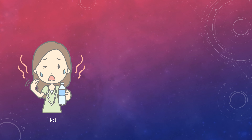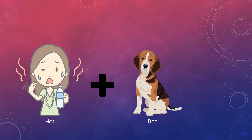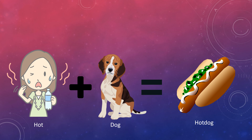Alright, let's move on to another example. I'm going to use the word hot. Which other word can you think of to add with this word to create a new compound word? I've chosen to use the word dog. So, the word hot plus the word dog makes — that's right, it makes the word hot dog.